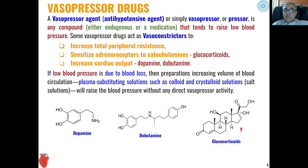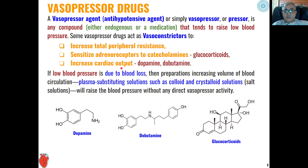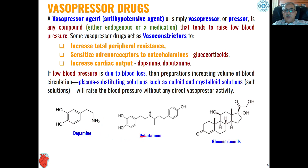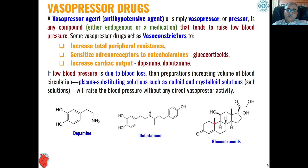Vasopressor agents include glucocorticoids, which are steroidal derivatives that can be used as vasoconstrictors. They may also increase cardiac output. The most commonly used vasoconstrictors in this category are dopamine and dobutamine, each having distinct chemical structures.